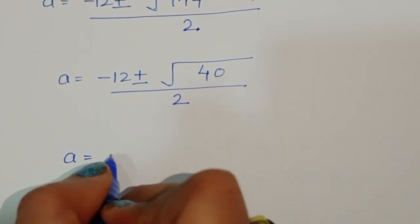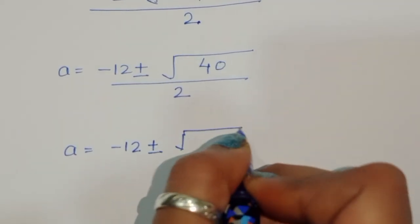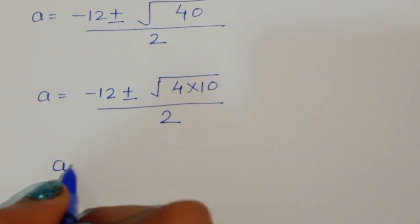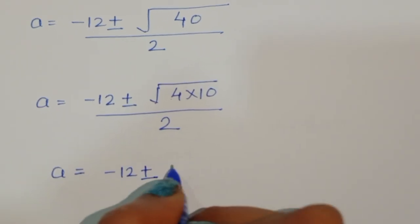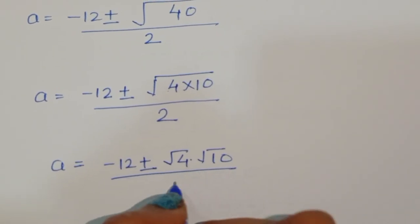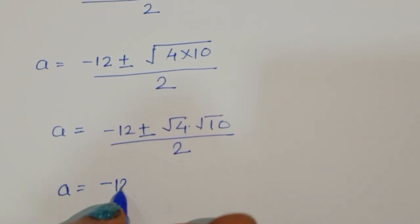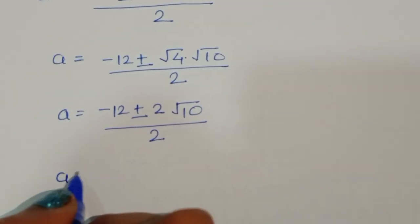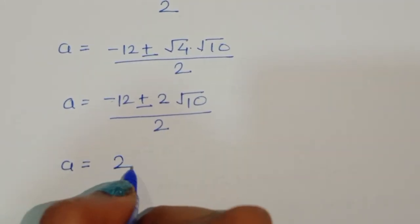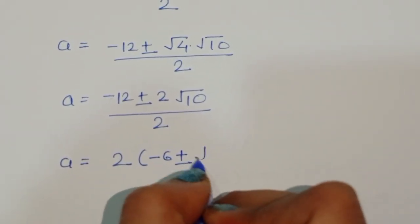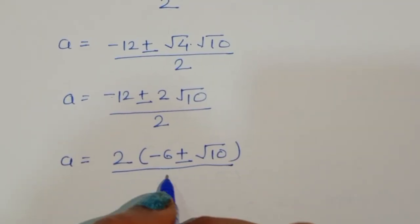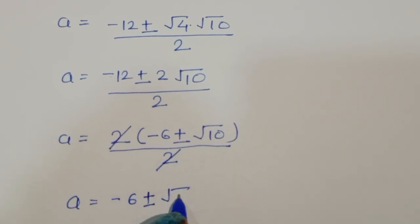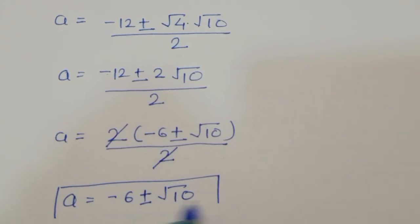We simplify √40 = √(4×10) = 2√10. So A = (-12 ± 2√10) / 2. Taking 2 as common factor and cancelling with the denominator, A = -6 ± √10. This is the value of A from the second equation.